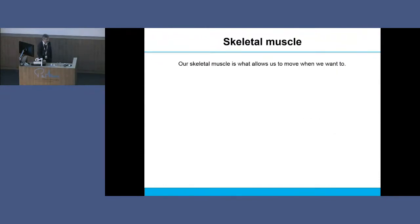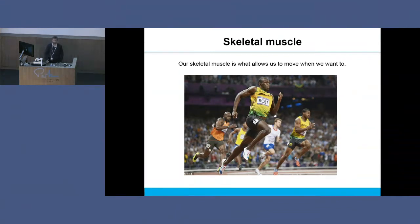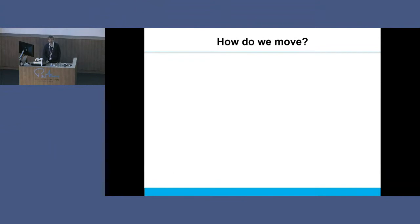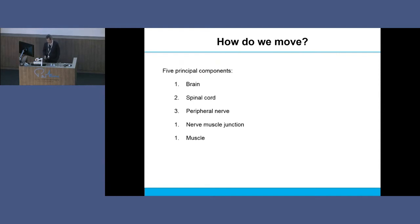Skeletal muscle is what allows us to move when we want to. Not all of us can move as well as this guy. So how do we move? Apparently I asked my mum at the age of three how I can move my finger when I want to - so you could say I've been doomed to work on muscle since age three. There are five major components allowing us to move: the brain, the spinal cord, the peripheral nerve connecting spinal cord to muscle, the nerve-muscle junction, and the muscle itself. The muscle is the last part in that puzzle, and that's what we'll be talking about today.